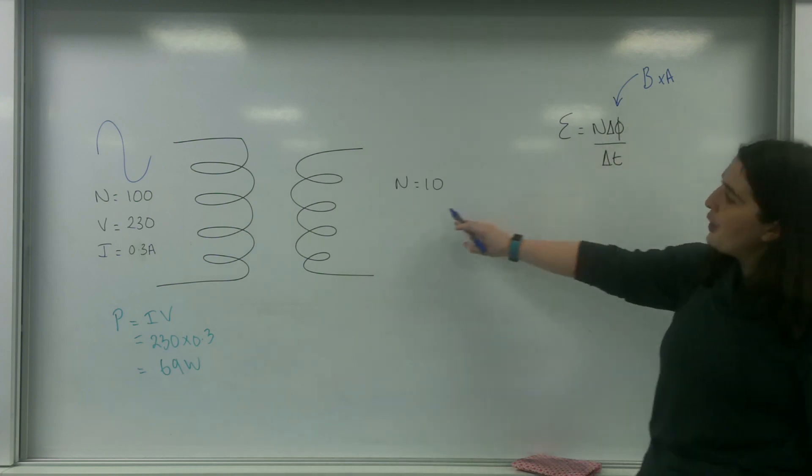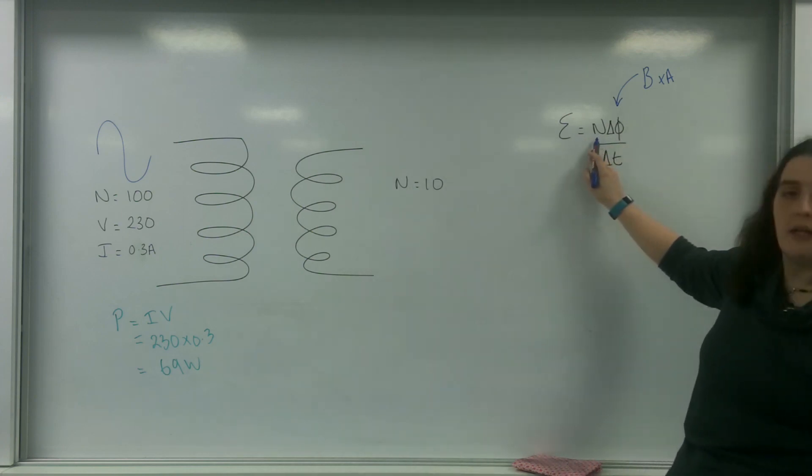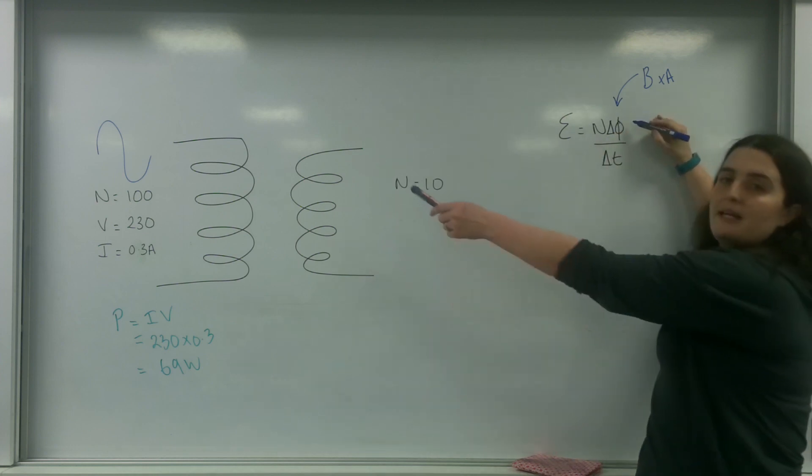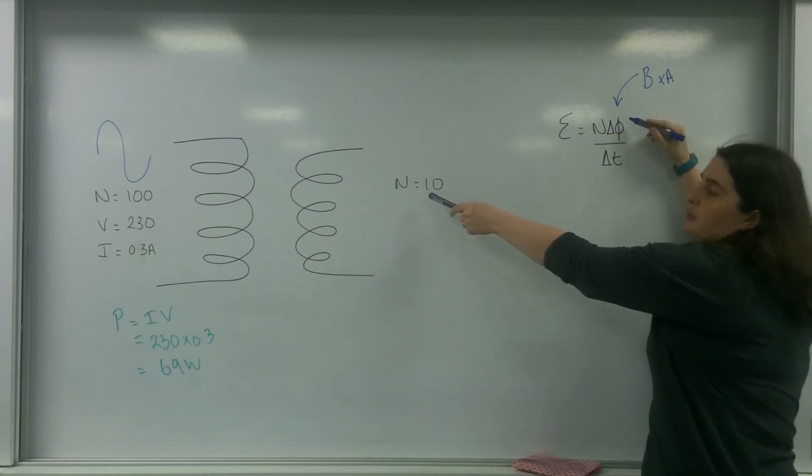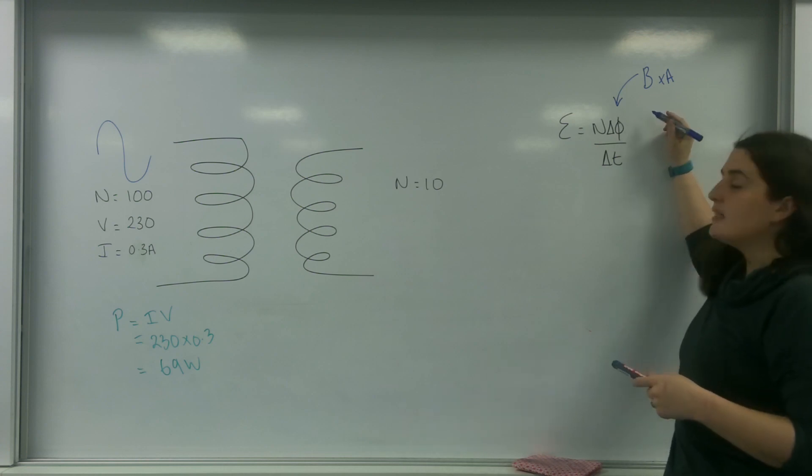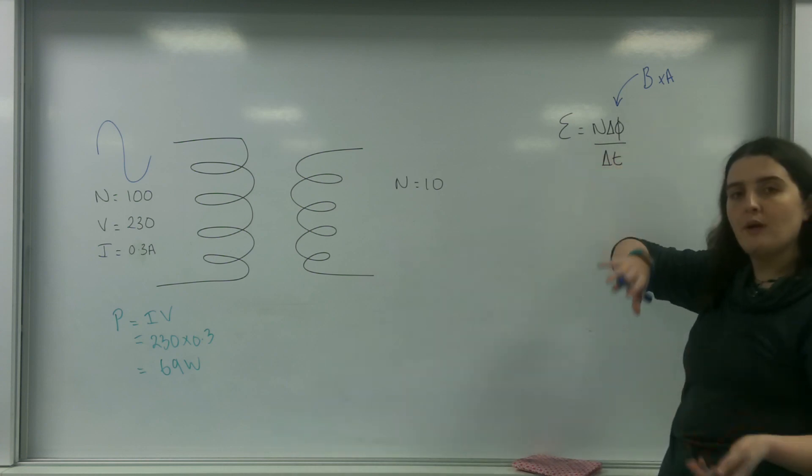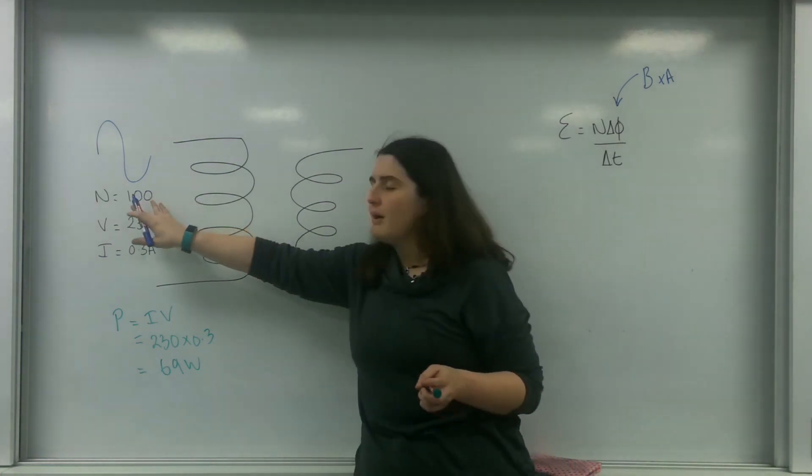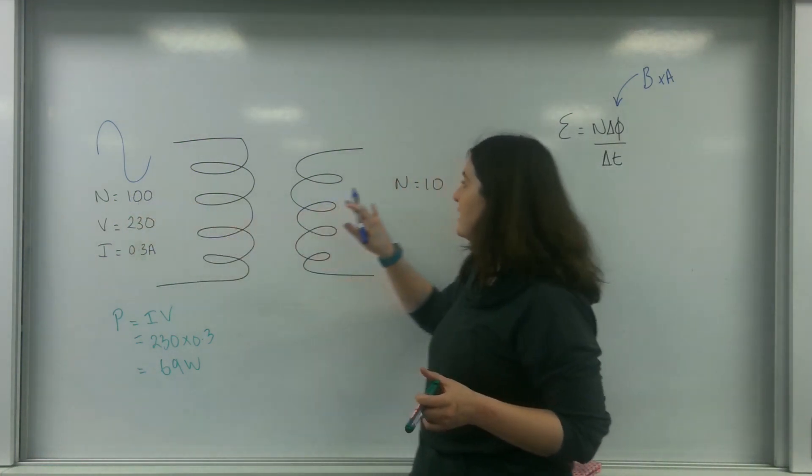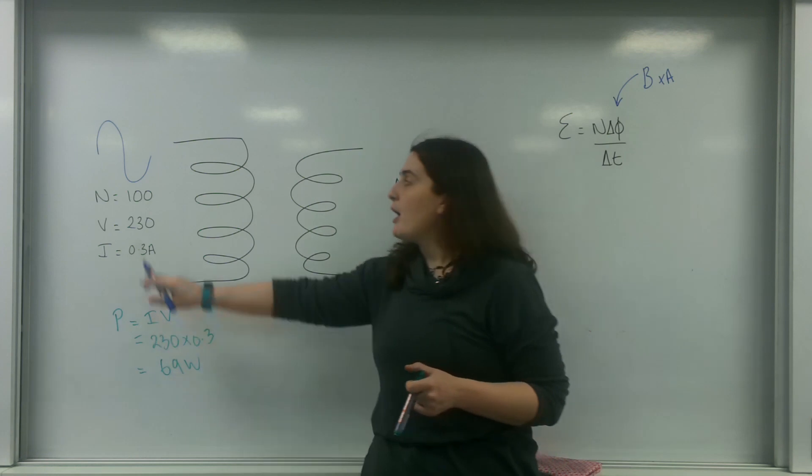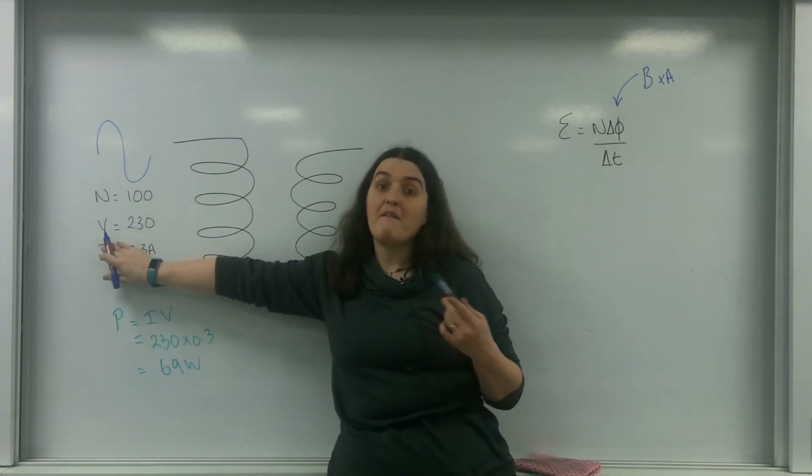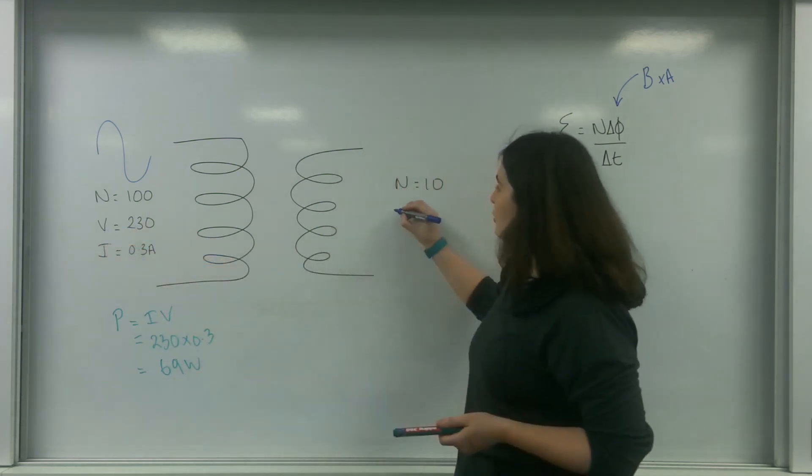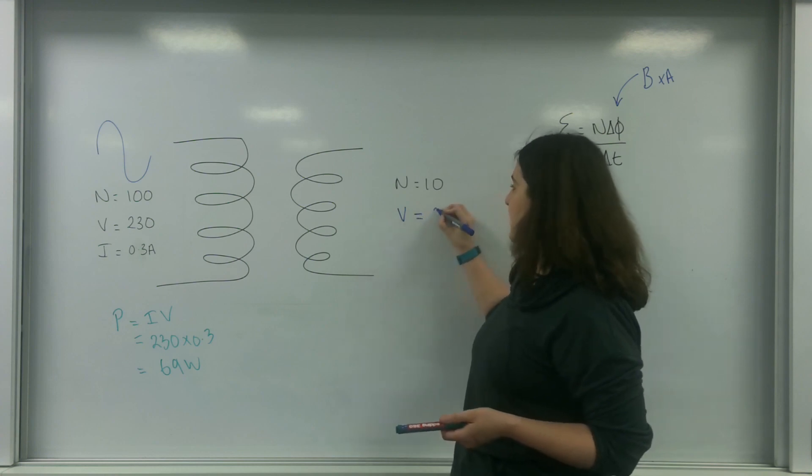Because the number of turns is smaller, even though it's making a massive change in flux, this has a smaller number of turns, which means the EMF is going to go down by the same factor. So my number of turns has gone from 100 to 10, which means my EMF, my potential difference, my voltage, is also going to go down by a factor of 10.